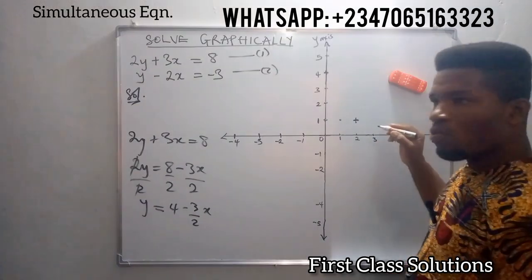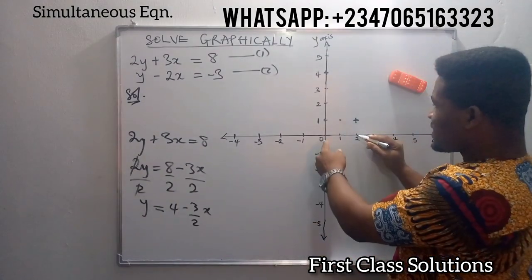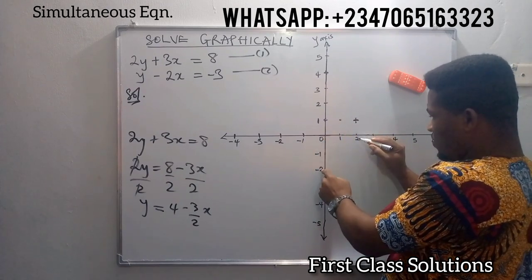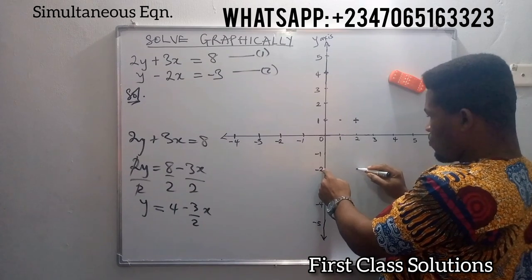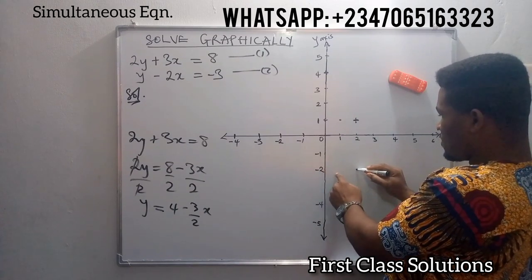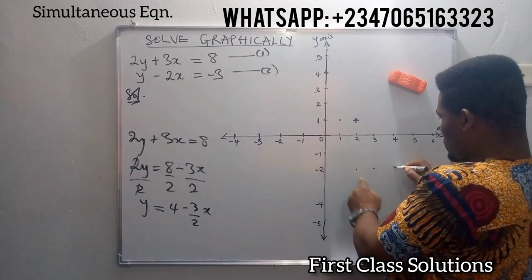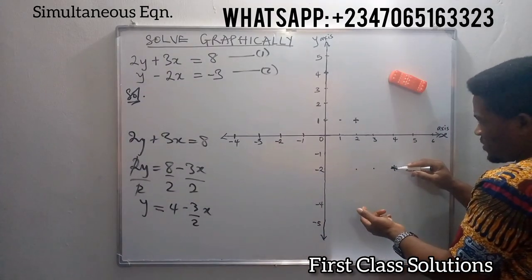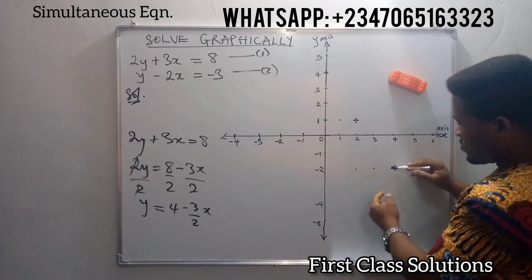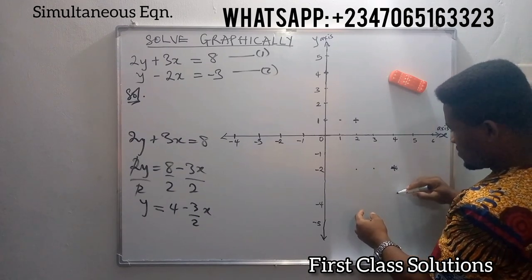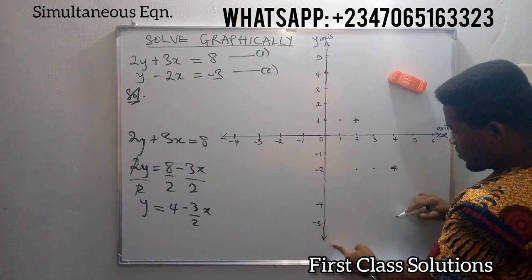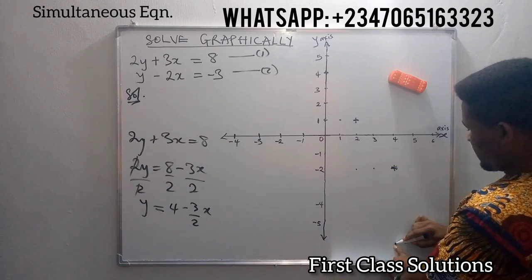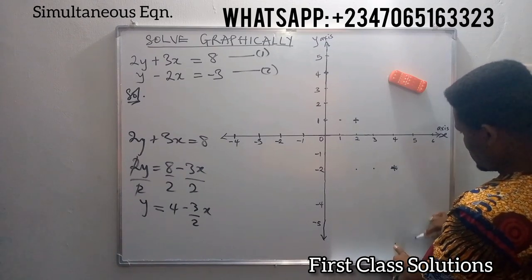We do the same thing again: take 3 steps downward on the axis of y from this place — 1, 2, 3 — then take 2 steps to the right on the axis of x: 1, 2. We can continue those steps further. Let's take more steps if necessary. Take 3 steps downward: 1, 2 — let's say we have 6 here — 3. Then take 2 steps to the right on the axis of x: 1, 2.